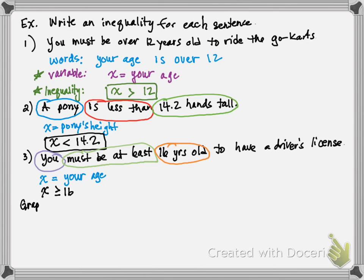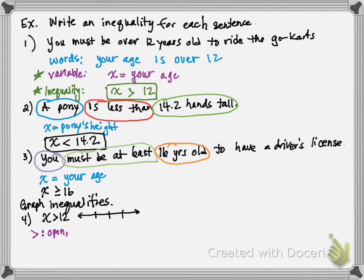Now we're ready to graph inequalities. They'll give me an inequality and a number line — if not, I can make one. Analyzing the key ingredient, the inequality symbol: 12 is not a solution, so it's an open circle, and it's pointing to the right. I put 12 in the middle, 11 in front, 13 behind. Open circle at 12 and color to the right.